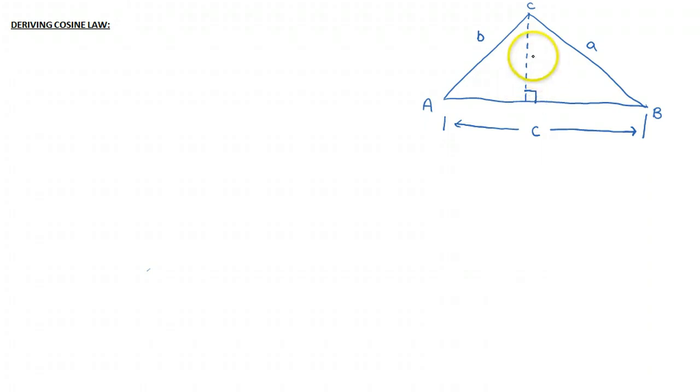Now, we called this length H. And this was convenient when we were deriving the sine law because sine is defined as the opposite over the hypotenuse, which was H over B. But with cosine law, we're going to use the cosine primary trig ratio. And the adjacent is this length from here to here, which we don't know how long that is. So what we're going to do is another little trick here, and we're going to break up the base of this triangle into two parts.